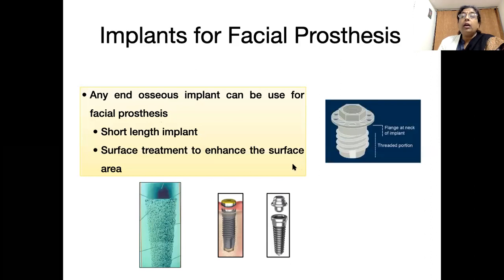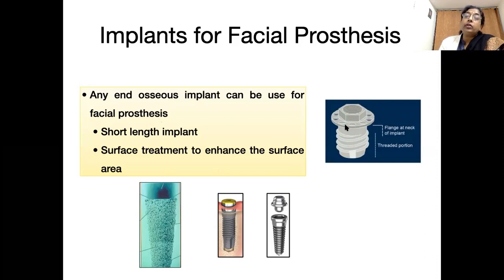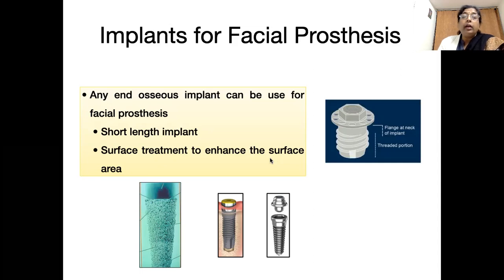For facial defects, although any type of implant can be used, initially the Brånemark design implant was especially designed for facial prostheses. These implants have a long neck — what we call a flange into the castor module — which has holes that provide stability to the implant and allow bone to grow through, aiding in osseointegration. Now we can use any implant that has surface modifications to increase surface area and is available in shorter lengths.